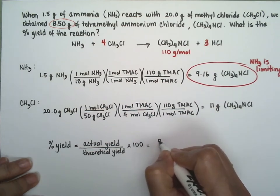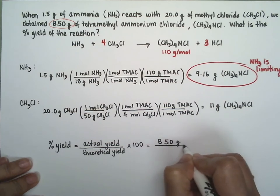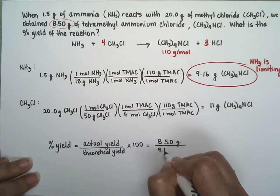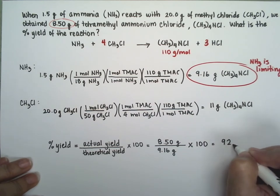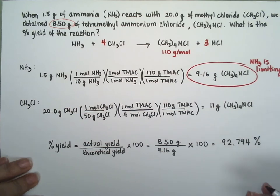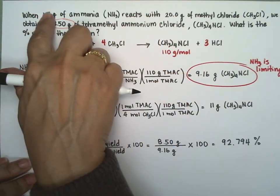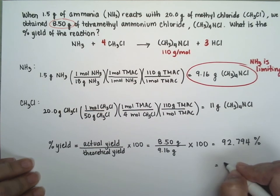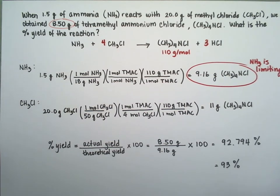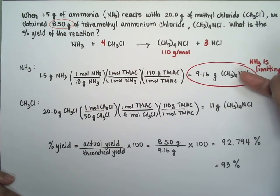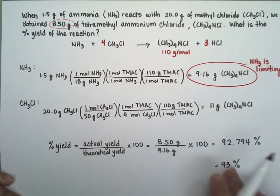Our actual yield is 8.5 grams, and our theoretical yield is 9.16 grams. Multiplying by 100 gives us 92.794 percent. Since our given values have two significant figures, we round to 93 percent. Notice that you can never get more than 100 percent yield — the theoretical yield represents the maximum possible, so the actual yield is always less.